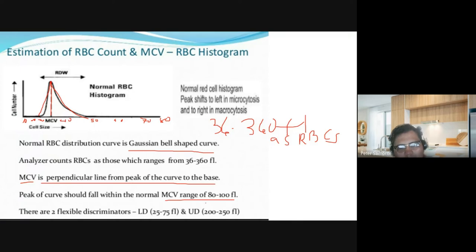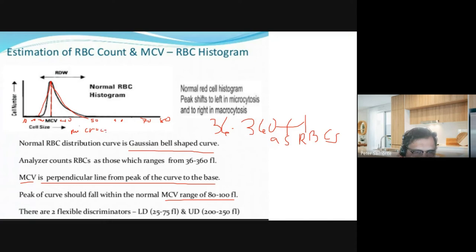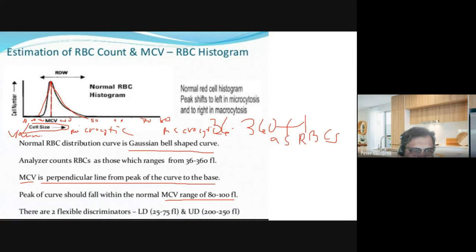If the peak falls below 80 femtoliters, the RBCs would be considered microcytic. If they fall greater than 100 femtoliters, they would be considered macrocytic. Remember, we're talking about cell size which refers to volume, and whenever we talk about volume, it refers to femtoliters. The Y axis counts the cells one by one and forms the curve. The Gaussian bell curve's peak should fall within 80 to 100 to be considered normocytic.